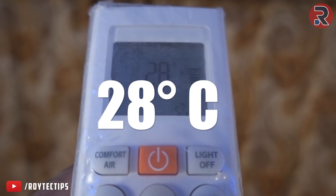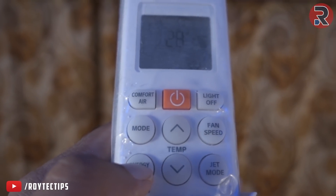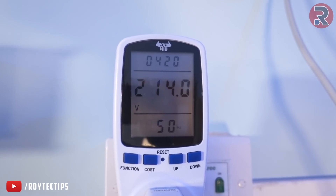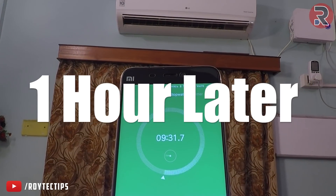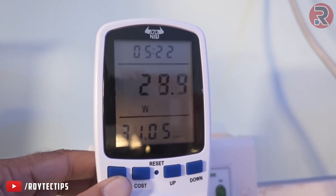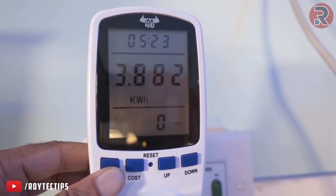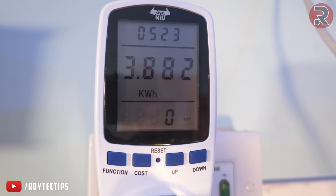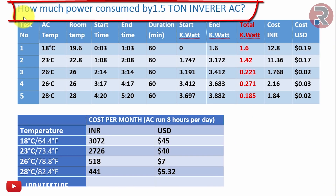Now I'm running the AC at 28 degrees centigrade with the energy saving mode enabled from the remote. I set the temperature to 27-28 degrees and pressed energy saving mode — it's now consuming 214 watts. After running for about an hour at 28 degrees, the compressor is probably off and it's consuming around 30 watts. This hour it consumed only 182 watts total.